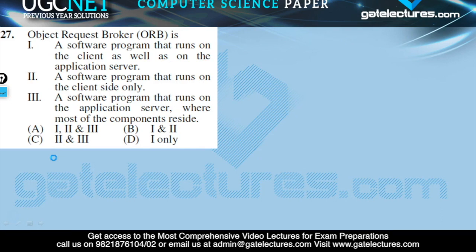Question number 27: 'Object Request Broker (ORB) is — option 1: a software program that runs on the client as well as on the application server; option 2: a software program that runs on the client side only; option 3: a software program that runs on the application server where most of the components reside.' The ORB is middleware that works like a middleware in distributed computing using CORBA.